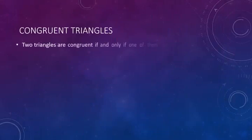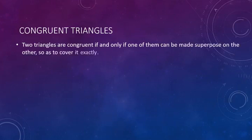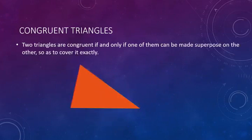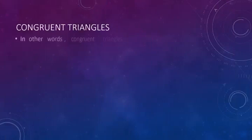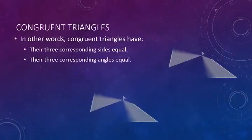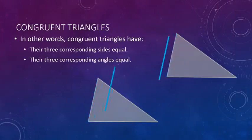Two triangles are congruent if and only if one of them can be made to superpose on the other so as to cover it exactly. In other words, their sides must be equal and their angles must be equal. Here the word corresponding plays a very critical role, which we will see further in the video.